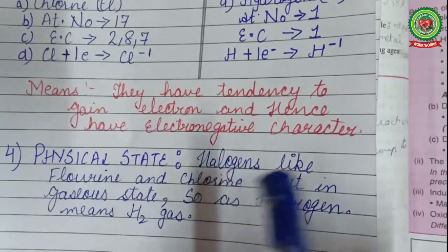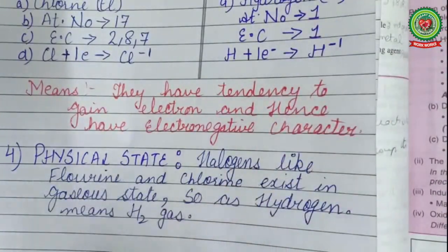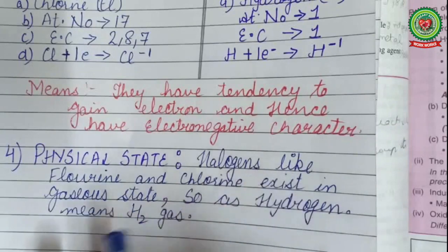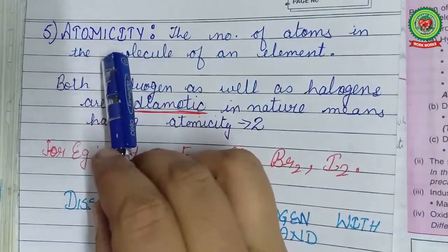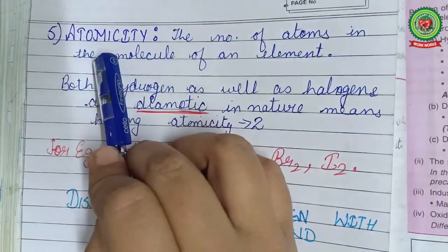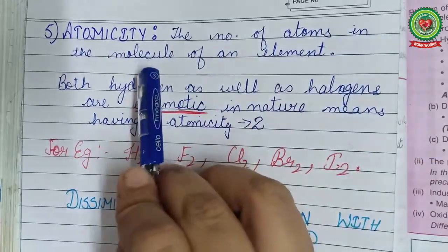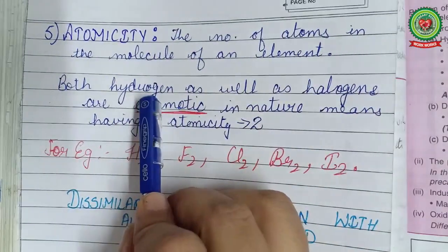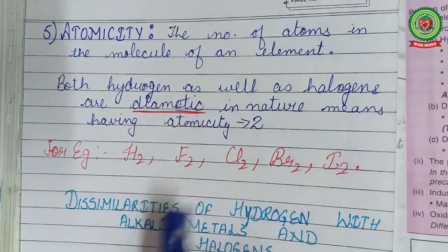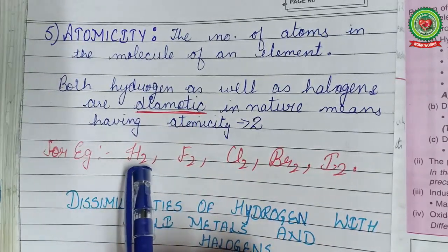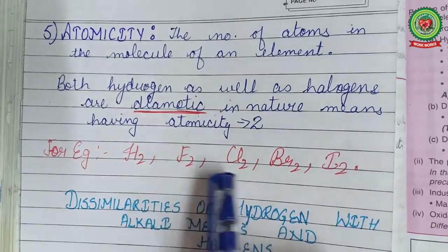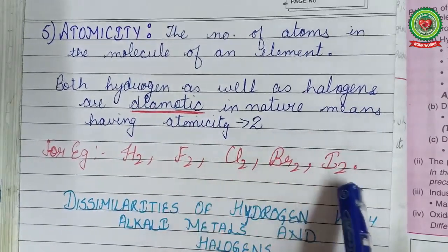The fourth similarity is physical state. Some halogens like fluorine and chlorine exist in the gaseous state, and so does hydrogen. The fifth similarity is atomicity — the number of atoms in a molecule of an element. Both hydrogen and halogens are diatomic in nature (atomicity 2): hydrogen exists as H₂, fluorine as F₂, chlorine as Cl₂, bromine as Br₂, and iodine as I₂.